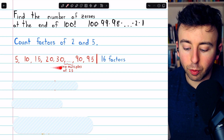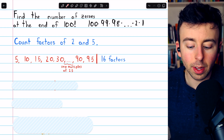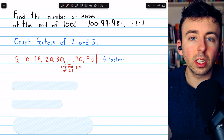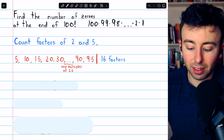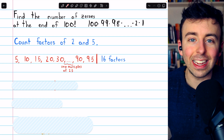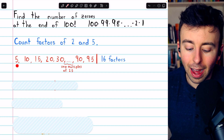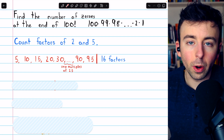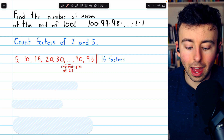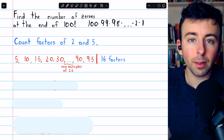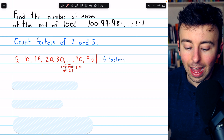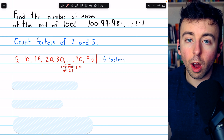We'll list off all the numbers that have 1 factor of 5 — these are numbers that appear in 100 factorial. Right now we're just counting the ones that have 1 factor of 5, which means we're skipping multiples of 25 because those have 2 factors of 5 each. Our list looks something like this: 5, 10, 15, 20, 30, 35, 40, and so on, counting all the way up for 16 total factors of 5 accounted for. Each of these contributes 1 factor of 5.